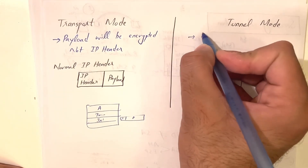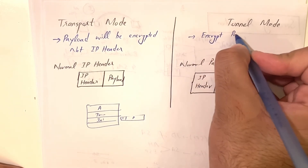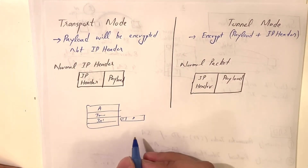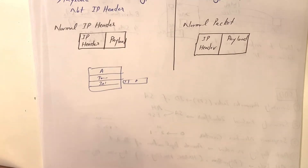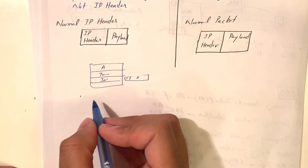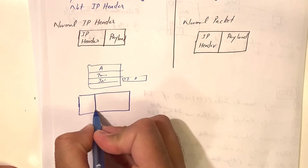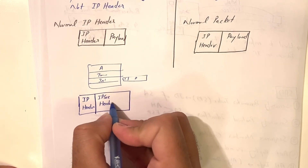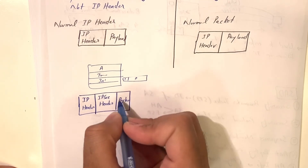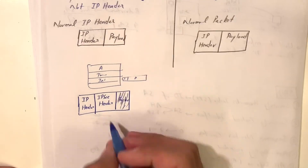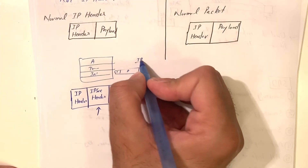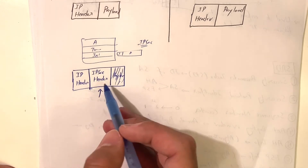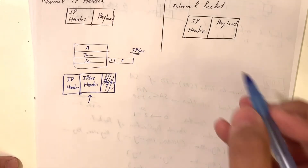Tunneling mode is where we encrypt both the payload plus the IP header. In transport mode, for each packet, an IPsec header is injected between the IP header and the payload — everything after the IPsec header, which is the payload, is encrypted while the IP header remains unchanged.